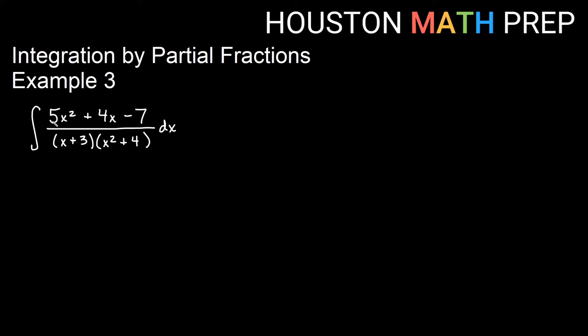This is our example 3 video, integration by partial fractions. We have the integral of 5x squared plus 4x minus 7 over x plus 3 as a factor and x squared plus 4 as a factor. If you distributed these out, you would notice that the lead term would be an x cubed term, and x cubed is a higher power of x than our highest power of x on the top, which is x squared, so this is a proper fraction.